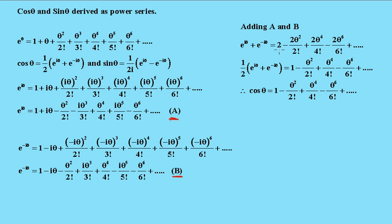Dividing both sides by 2, we get a half times e to the i theta plus e to the minus i theta, which of course is what cos theta is. So this is the power series for cos theta: 1 minus theta squared over factorial 2 plus theta to the fourth over factorial 4 minus theta to the sixth over factorial 6.